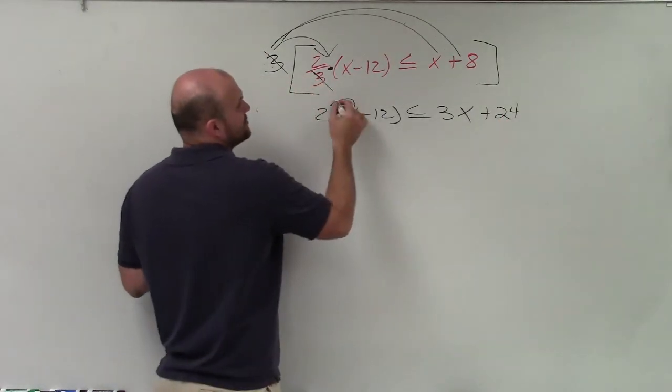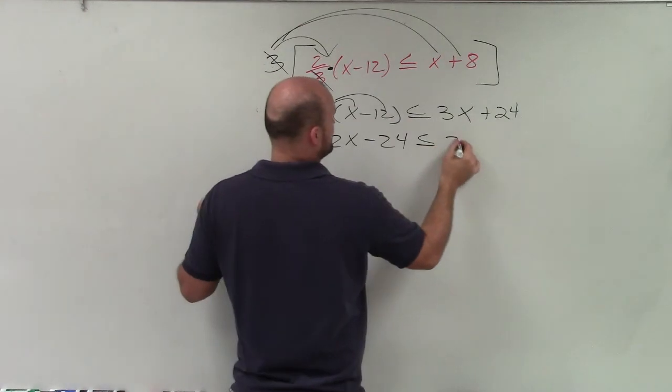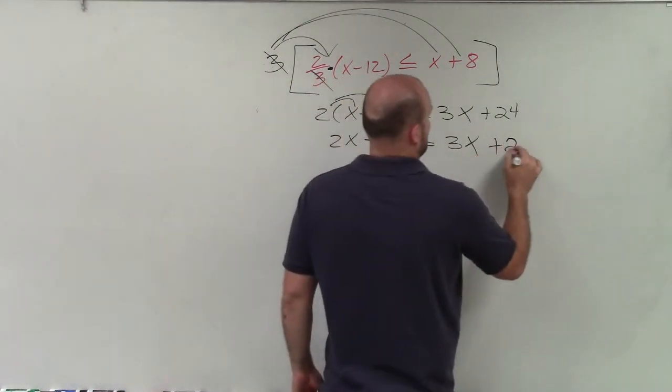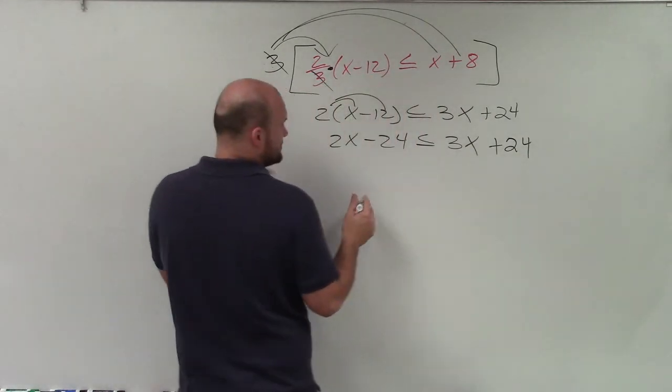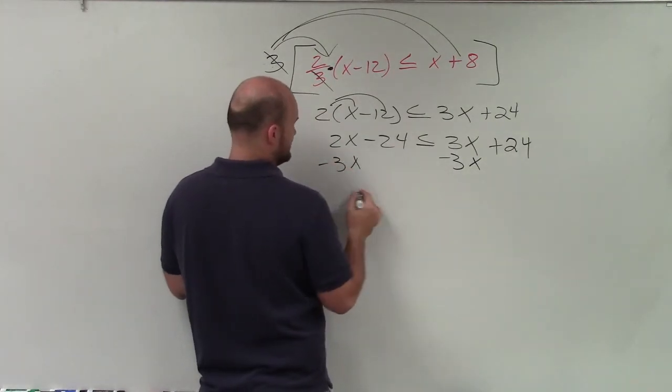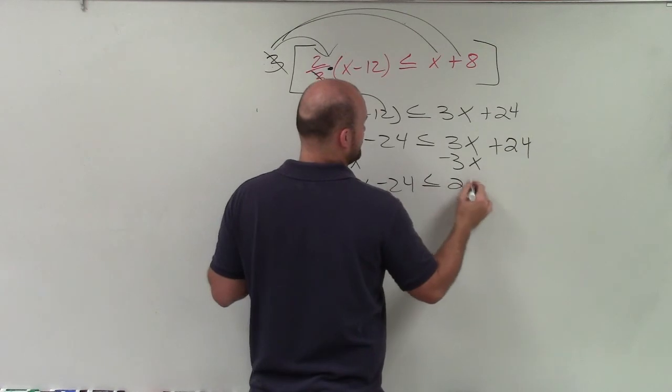Now I can apply a distributive property here. So I get 2x minus 24 is less than or equal to 3x plus 24. Now I need to get the x's to the same side. So what I'm going to do is I'll subtract 3x here. Subtract 3x. And so therefore, I have negative x minus 24 is less than or equal to positive 24.